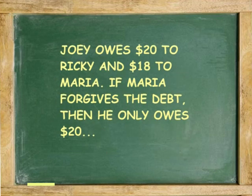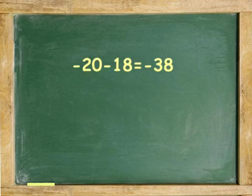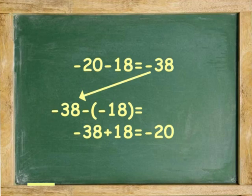Let's try another example. Joey owes 20 dollars to Ricky and 18 dollars to Maria. If Maria forgives the debt, then he only owes 20 dollars. The equations to show this are negative 20, negative 18 equals negative 38. 38 dollars is what he owes. If one debt is forgiven, take away the negative. Negative 38 minus negative 18 equals negative 38 plus 18 equals negative 20.